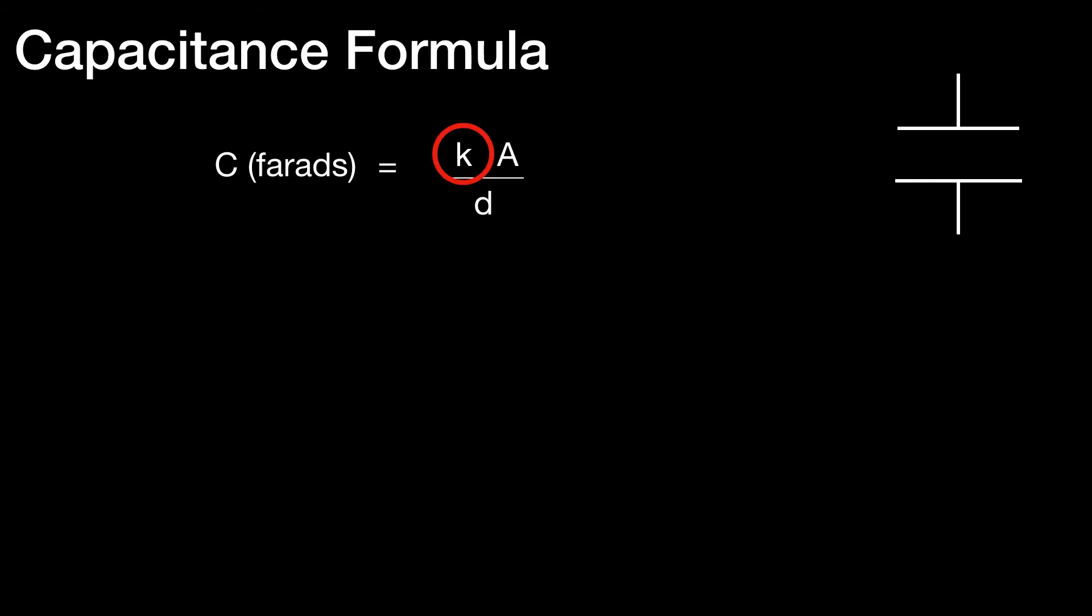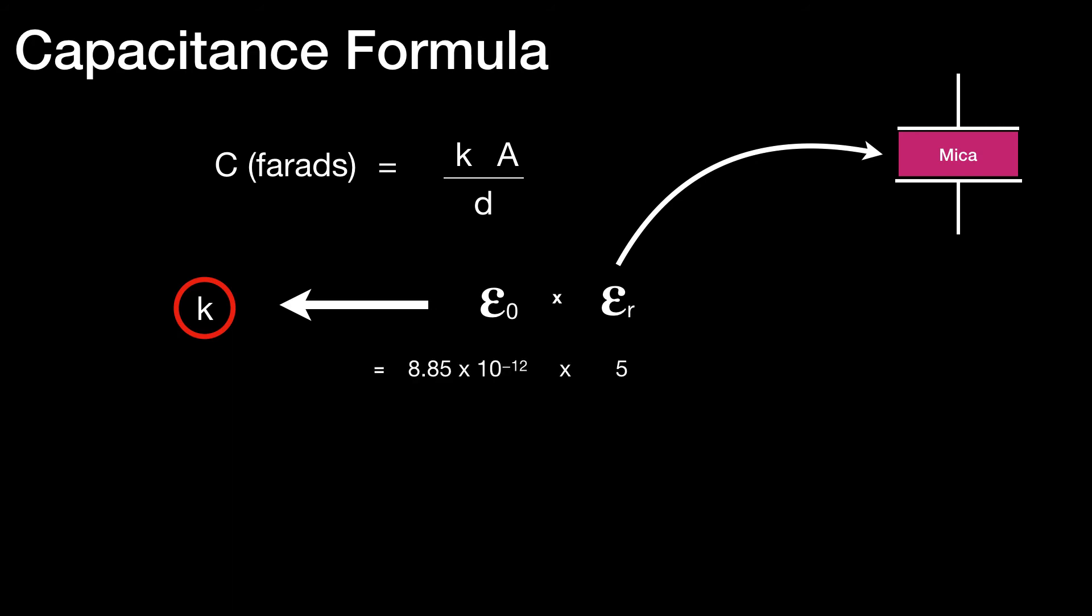So let's have another look at K. If we had a mica capacitor, then K is made up of epsilon 0 times epsilon R. Epsilon R being the relative permittivity of mica, that is a permittivity relative to free space. And we know that's about 5.